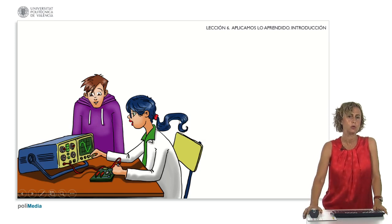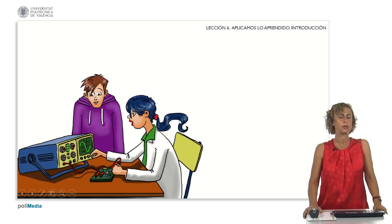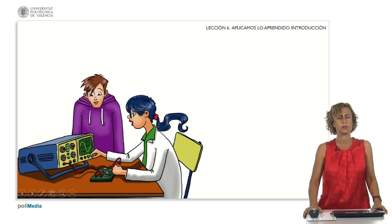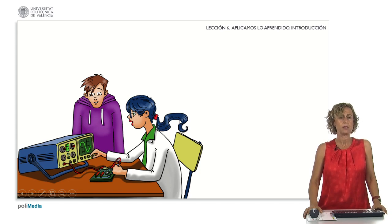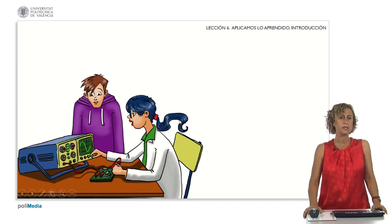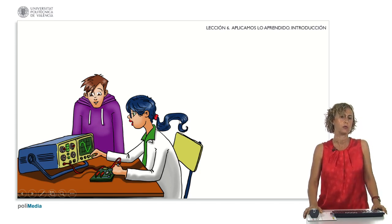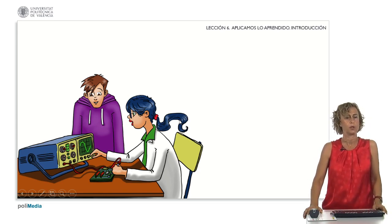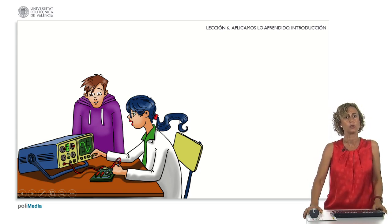This time we meet Jota and Amanda in the lab who are using an analog oscilloscope that has a cathode ray tube. This device is a measuring device that allows us to visualize the voltage as a function of time, and is an application of the action of the electrostatic field on charged particles.